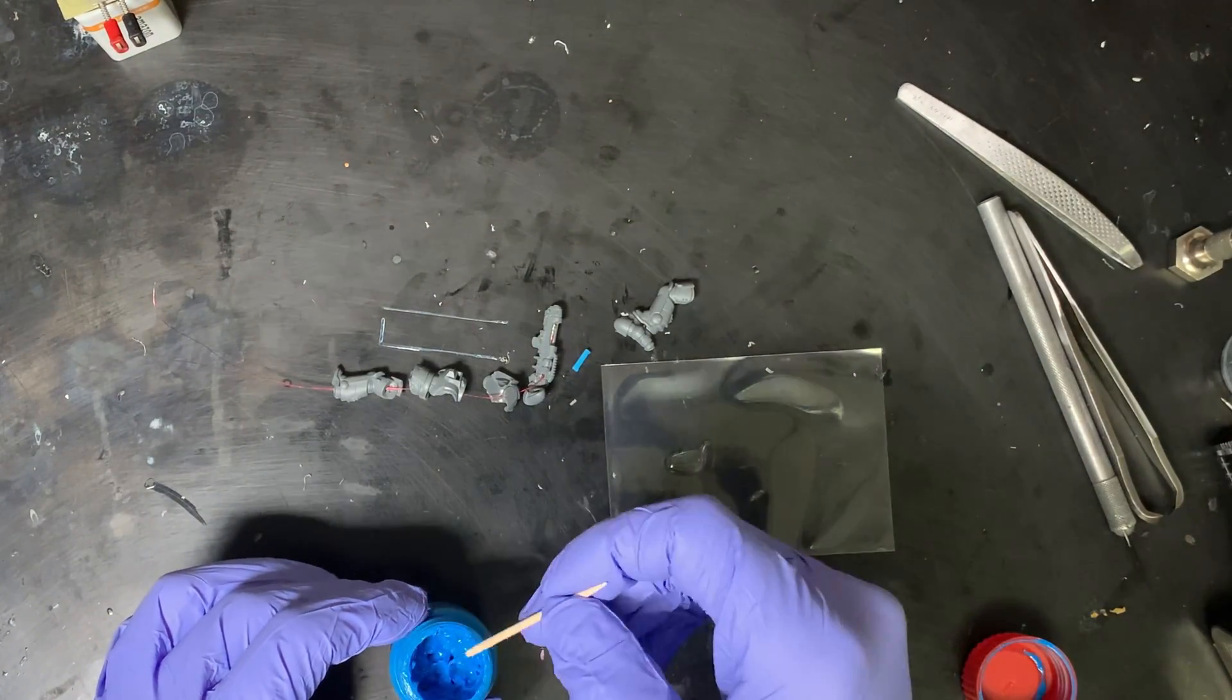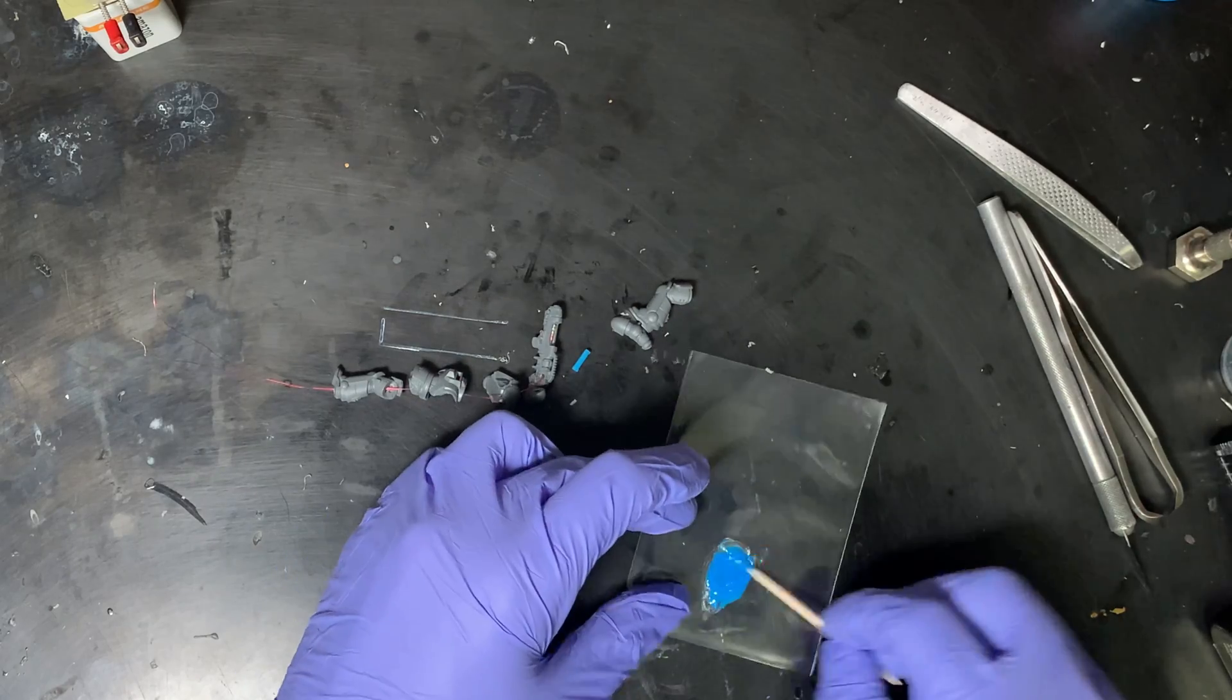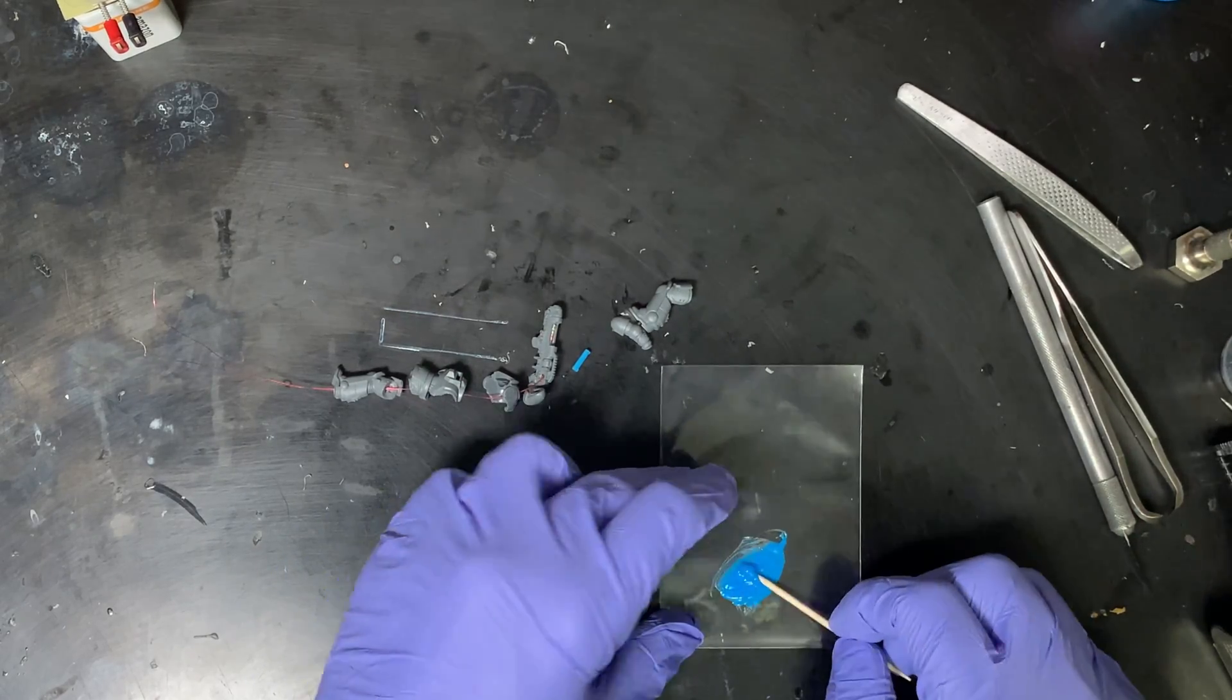Time to mix up some five minute epoxy. I'm going to use the same resin dye in here so I can use that kind of as a gap filler to make sure that this plasma coil is filling the whole space.